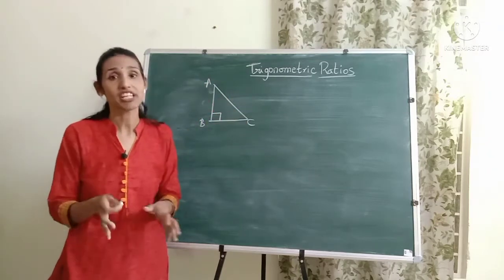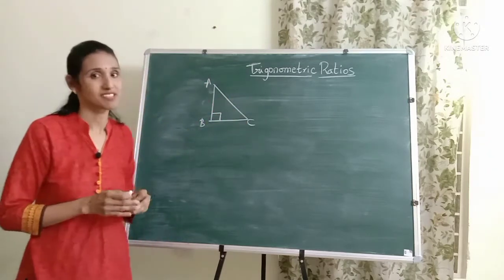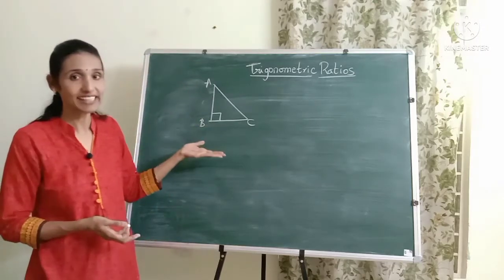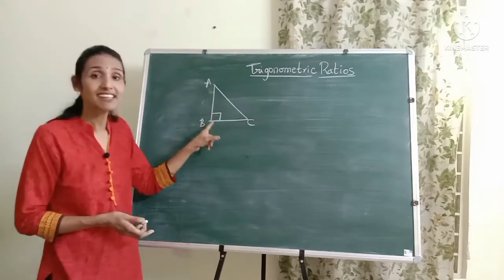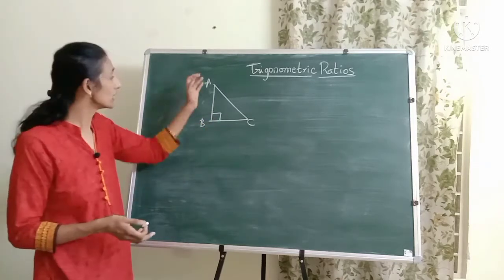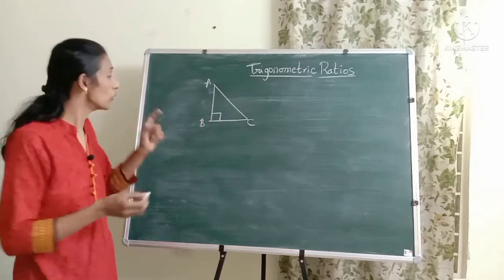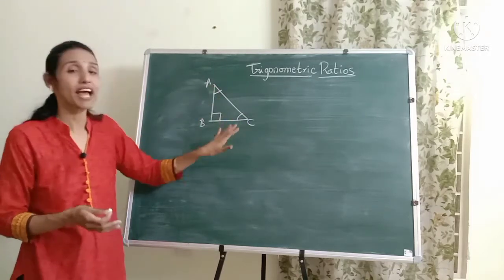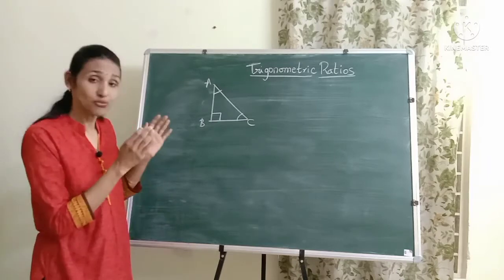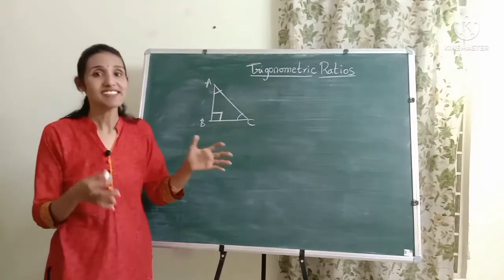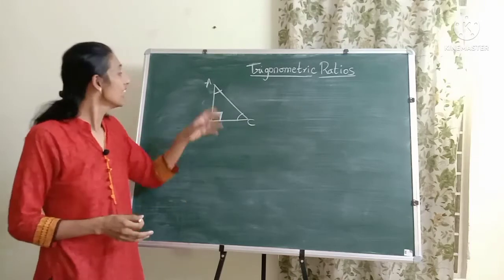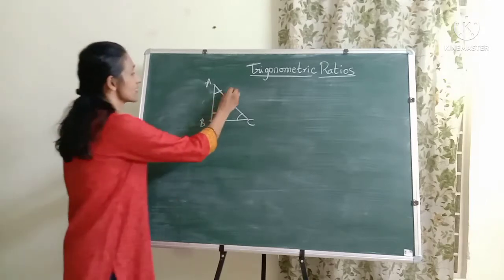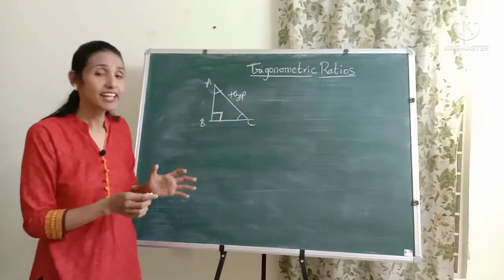Before we jump into trigonometric ratios, let's quickly revise a few important terms. Trigonometry comes into the picture whenever there is a right angle triangle. Here I have a right angle triangle where the right angle is at angle B. You already know that the sum of angles has to be 180 degrees, which means these two angles must add up to 90 degrees — so these two angles are always acute. Now let's look at the three sides: the side opposite the 90 degrees is called the hypotenuse.